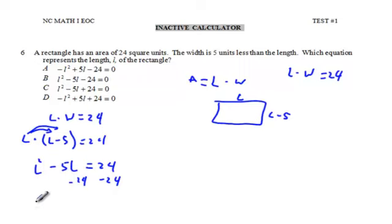And we know the final equation is going to be L squared minus 5L minus 24 equals 0.